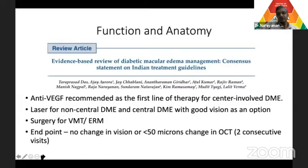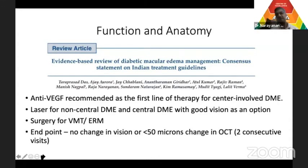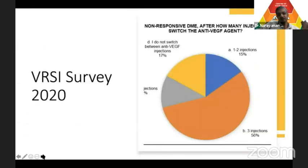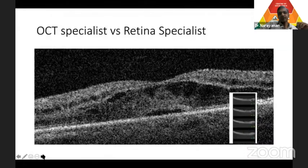What is the endpoint for injection? There are Indian DME guidelines: anti-VEGF is recommended as first line, laser if non-central, and surgery for VMT or ERM. The endpoint is when there is no change in vision for two or more consecutive visits after the first six months, or less than 50 microns change. VRSA members usually switch after three injections. Don't become an OCT specialist — be a retina specialist.